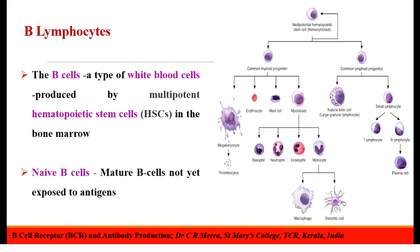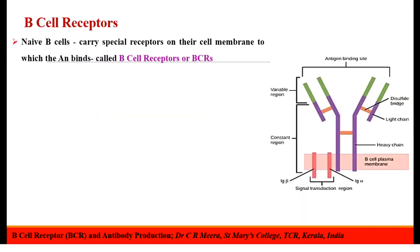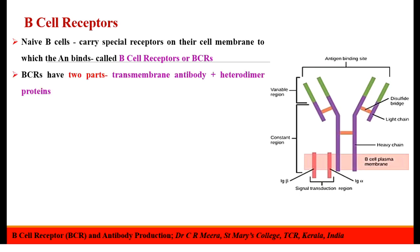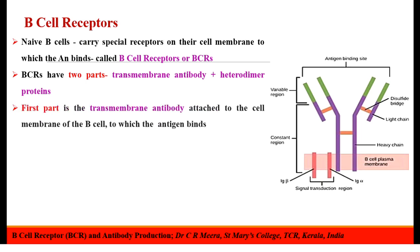The mature B-cells that have not been exposed to the antigen are called the naive B-cells. The naive B-cells carry special receptors on their cell membrane to which the antigens bind. These receptors are called the B-cell receptors or the BCRs. BCRs are made up of two parts: the transmembrane antibody and the heterodimer proteins. The transmembrane antibody is attached to the cell membrane of the B-cells and to that the antigen actually binds.